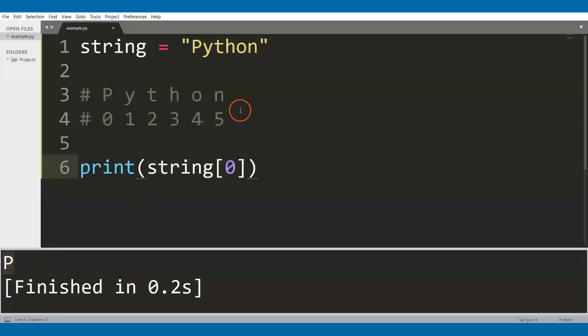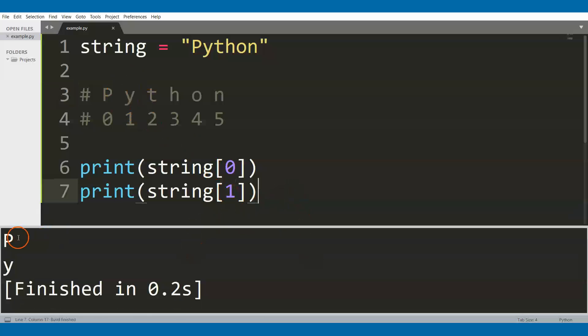Let's do this with all the remaining characters of the string. Now we are going to print the character of the string at index 1, which corresponds to the letter Y. If we save the file and run the code with ctrl B, you can see that now we have the letter P right here, and the letter Y right here.